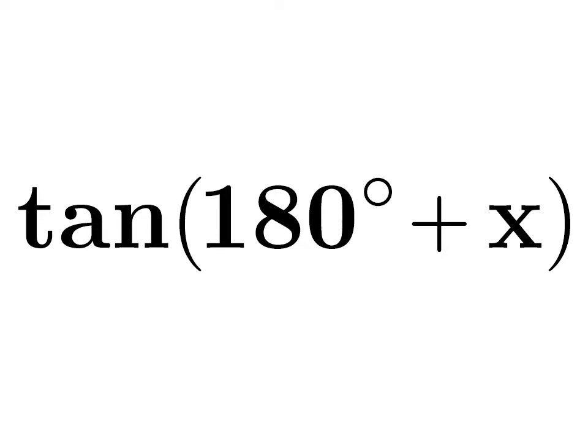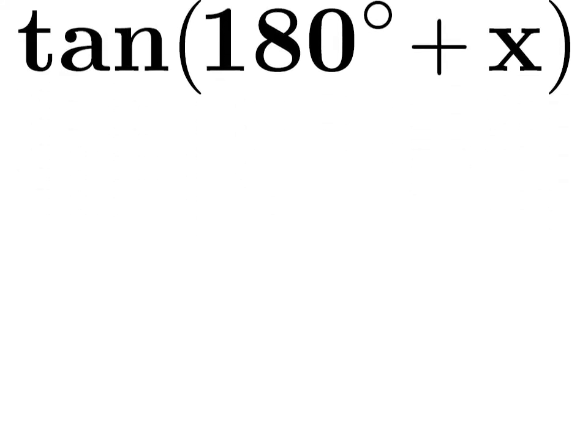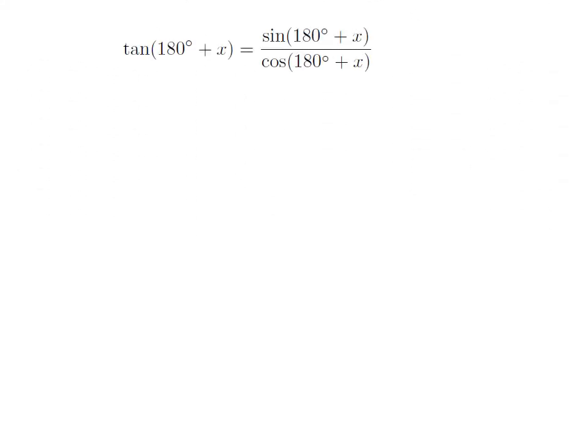In this video we will learn to find the value of tangent of 180 degrees plus x. As we know, tangent of theta is equal to sine of theta divided by cosine of theta. So tangent of 180 degrees plus x is equal to sine of 180 degrees plus x divided by cosine of 180 degrees plus x.